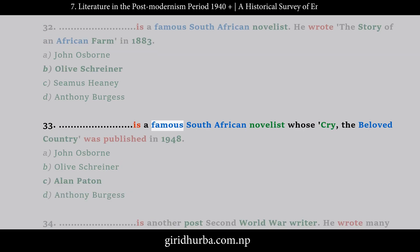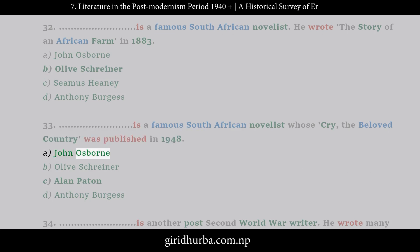Question 33: Who is a famous South African novelist whose Cry, The Beloved Country was published in 1948? A. John Osborne. B. Olive Schreiner. C. Alan Paton. D. Anthony Burgess.